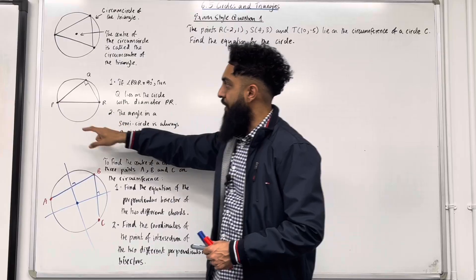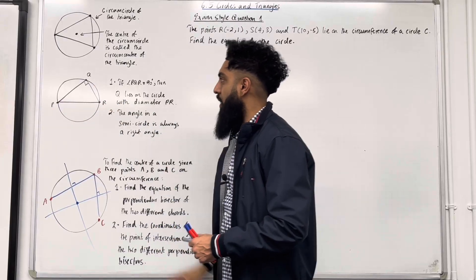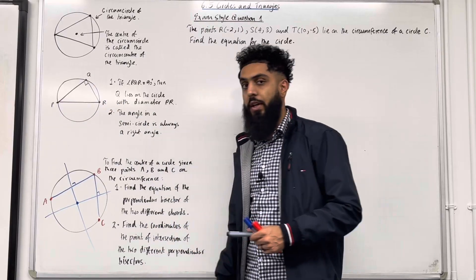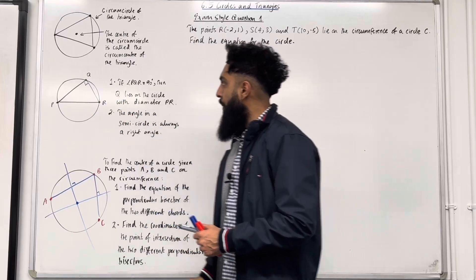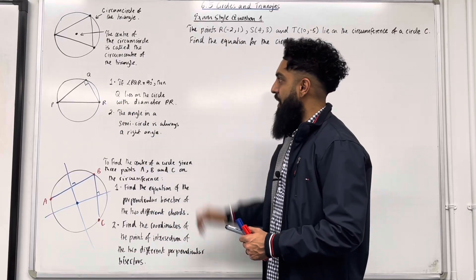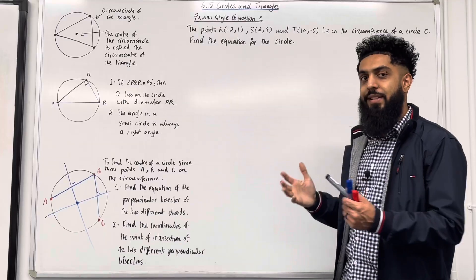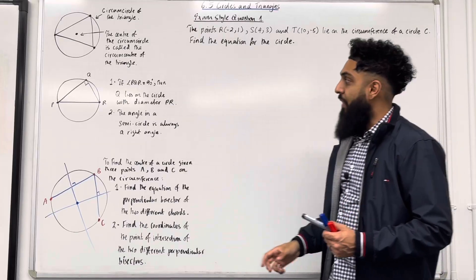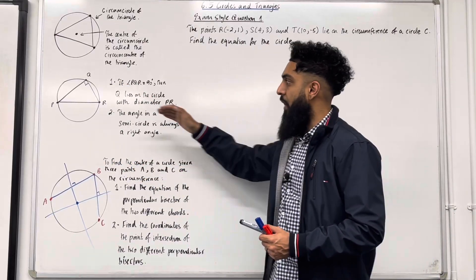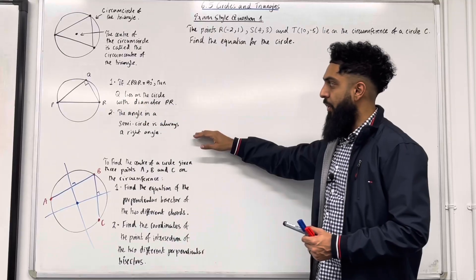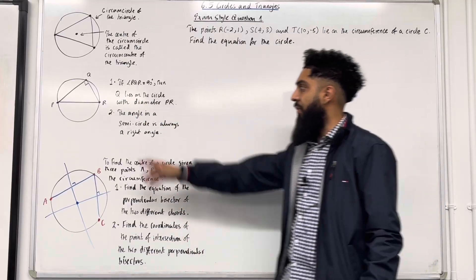Second diagram: I've got a circle drawn with the points P, Q and R labelled on the circumference. A triangle PQR is drawn within the circle. Number 1: if the angle PQR is 90 degrees, then Q lies on a circle with diameter PR. Number 2: the angle in a semicircle is always a right angle.